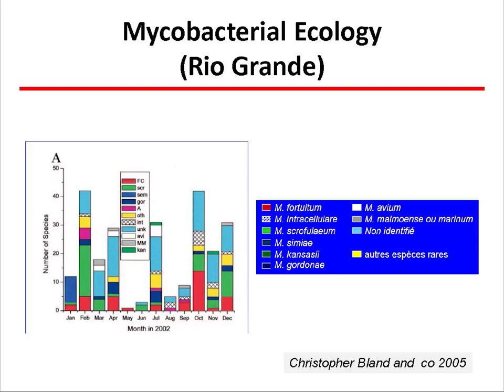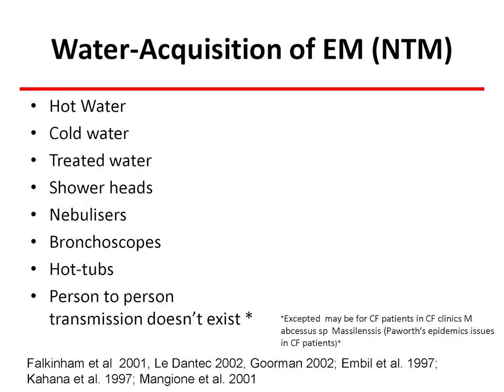I reference this nice paper by Christopher Bland from 2005 that represents the ecology of mycobacteria and tuberculosis in the Rio Grande — a river of almost 3,000 kilometers on the border of the United States and Mexico, with about 2 million people living around it. Over one year, more than 20 species were found, differing between weather conditions and seasons, and were all the time changing.